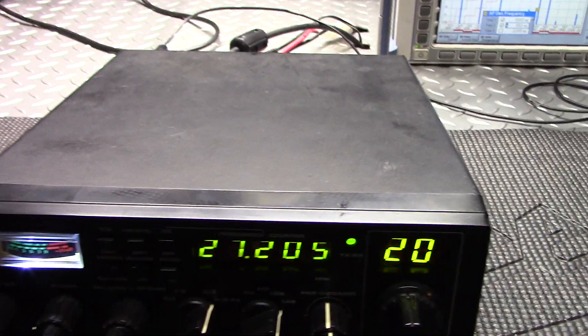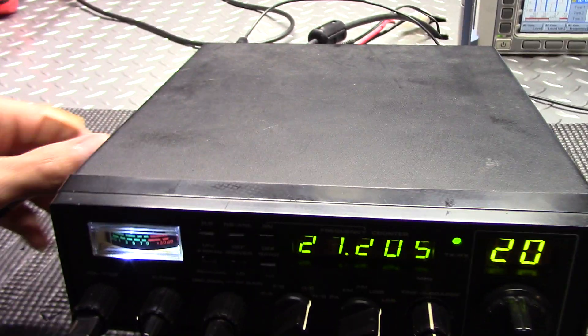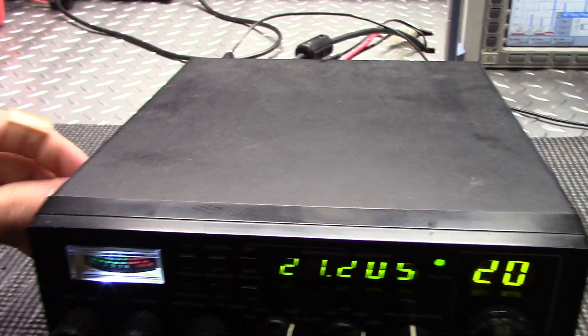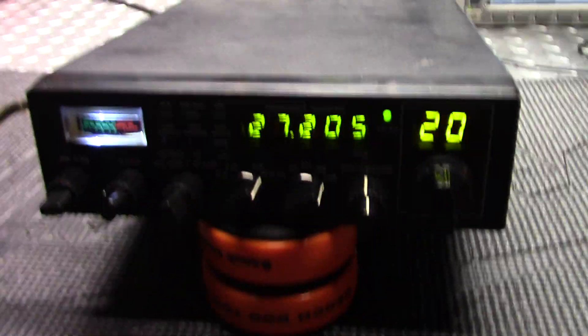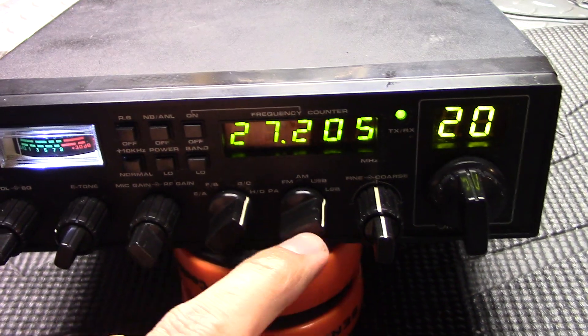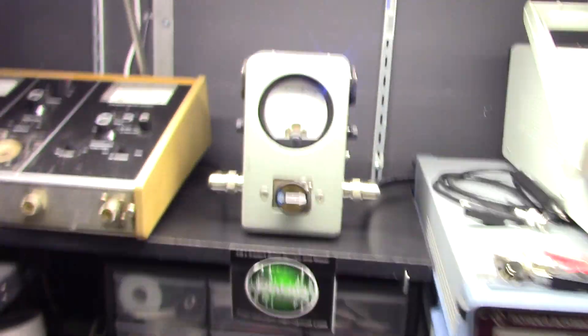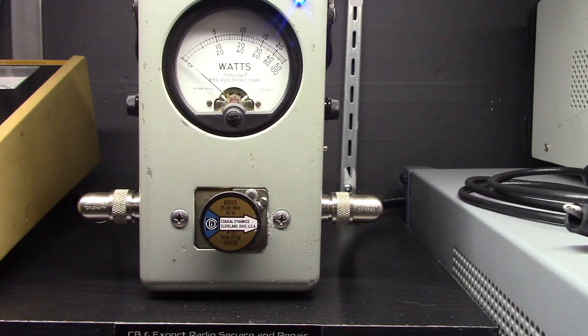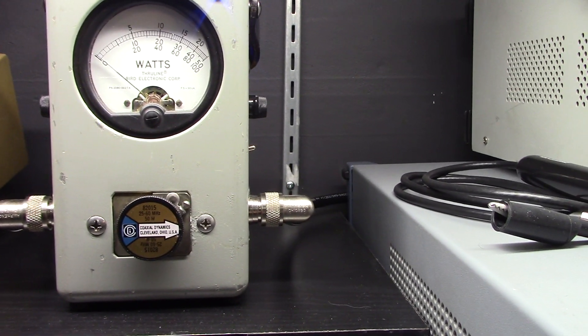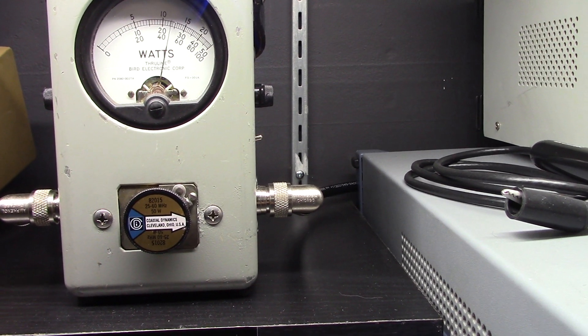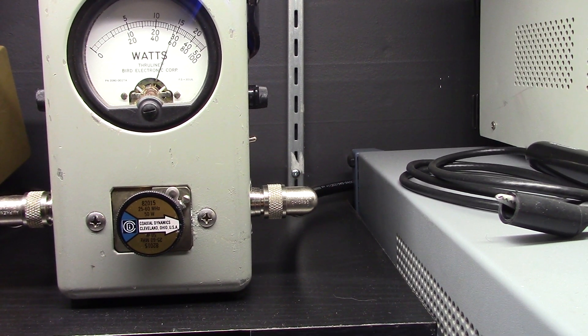Nice and linear on sideband, which most Galaxies you hear out there are not. Nobody wants to take the time to do them the right way. We'll stay on sideband, we'll do some power readings over here on the Bird 50-watt slug. Middle scale: 1, 2, 3, 4, 5, 4, 4, 4, 4, 5. She'll tickle 30 on the peaks.